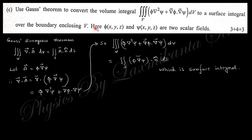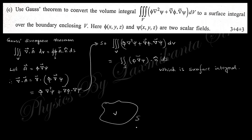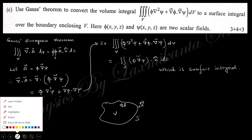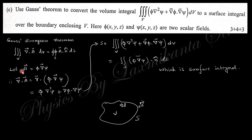The next question says: use Gauss's theorem to convert a volume integral to a surface integral over a boundary volume. The Gauss divergence theorem states that the volume integral of the divergence of any vector equals the closed surface integral of that vector. If we take the vector as φ grad(ψ) and take its divergence, then by comparing with the Gauss theorem expression we obtain the required result.